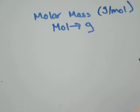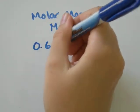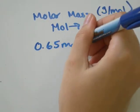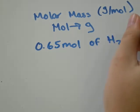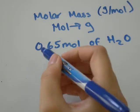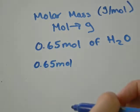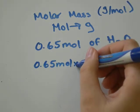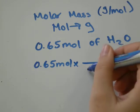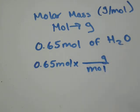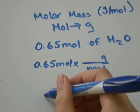Okay, let's say we had 0.65 moles of water, H2O. We've got 0.65 moles, it's important to write down your units, times how many grams per mole is in water. Well we need to know the molar mass of water.